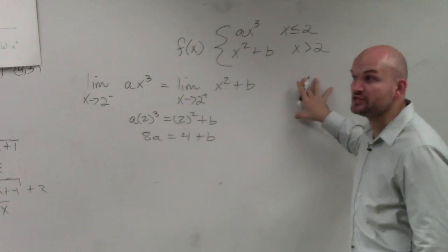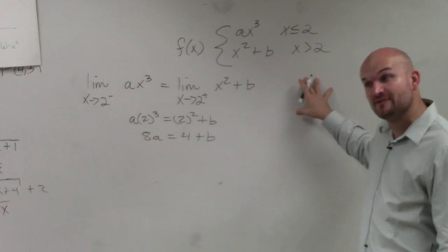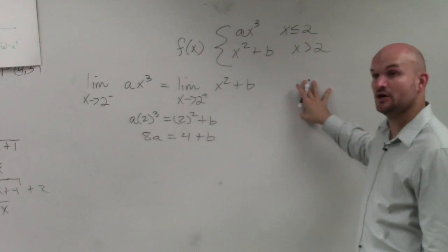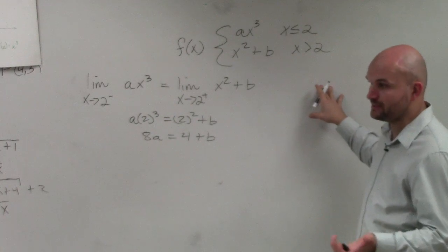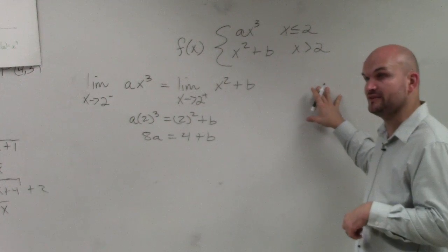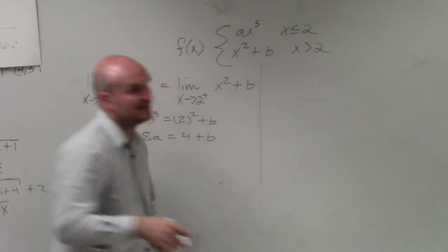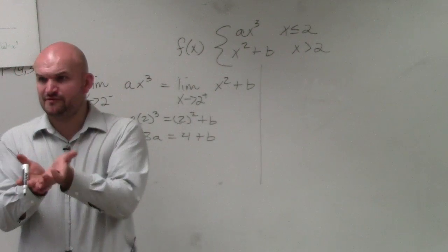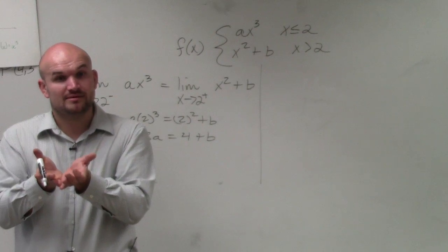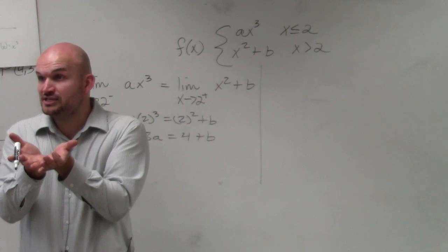So therefore, to check if they're differentiable, we want to make sure the derivative from the left is equivalent to the right. Because again, you can also think of like an absolute value. You can find the derivative from the left and from the right. It's continuous. An absolute value function is continuous. Right?